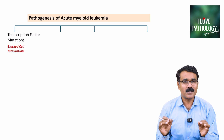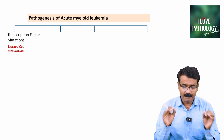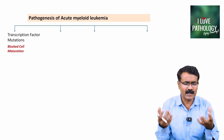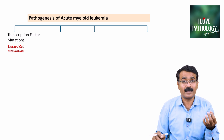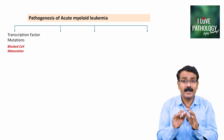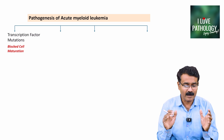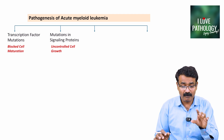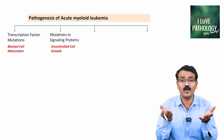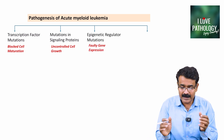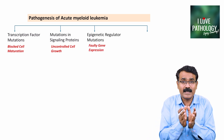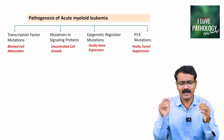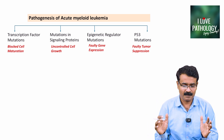The pathogenetic mechanisms can be categorized into: transcription factor mutations — which means blocking of cell maturation; mutations in signaling proteins — which means uncontrolled cell growth; epigenetic regulator mutations — resulting in faulty expression of genes; and TP53 mutations — which is faulty tumor suppression.